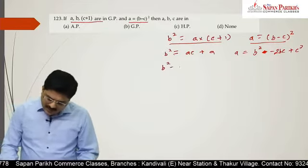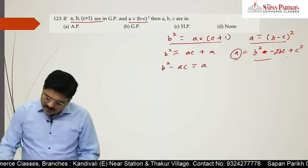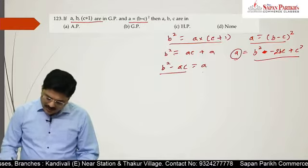Now from here, b² minus ac is equal to a. Here a is equal to - this is given. Here a equals this. I'll call this equation 1 and equation 2.